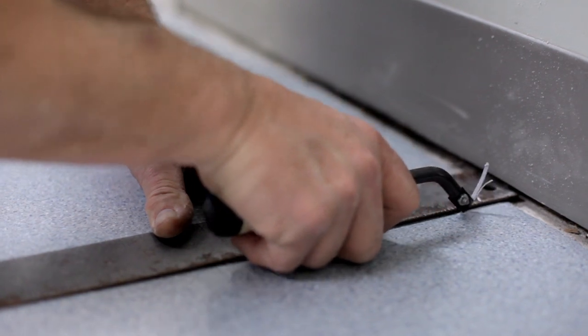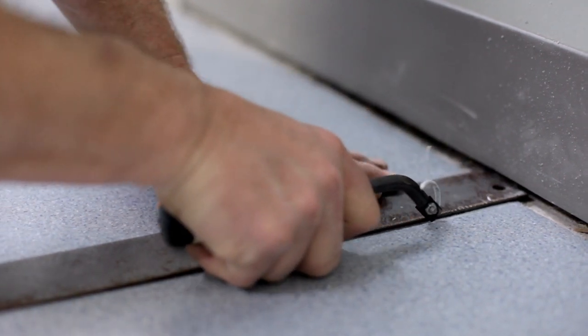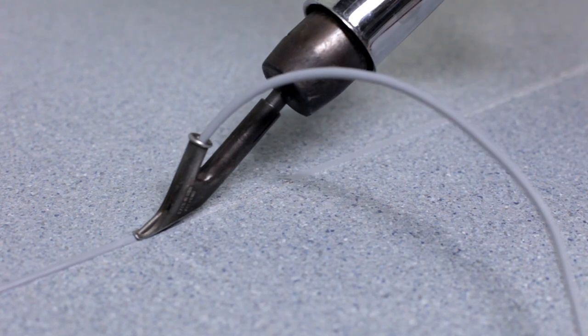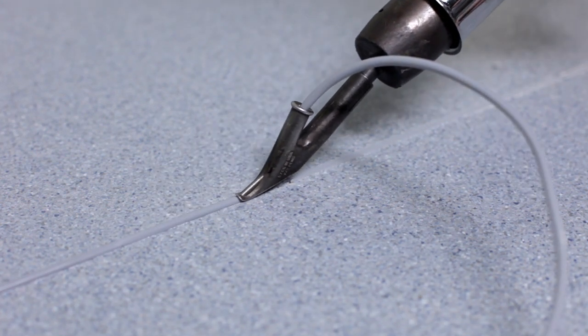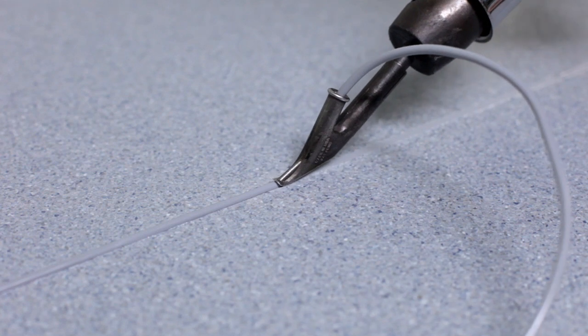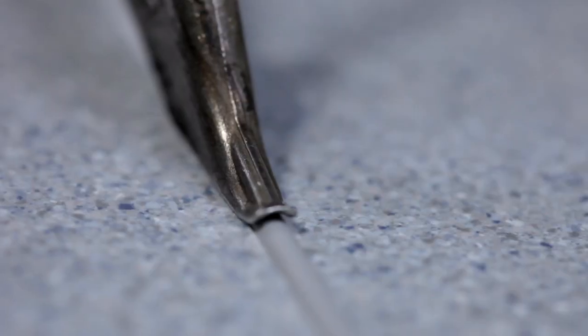Even when using a power groover, it will be necessary to groove the seam at the walls with a hand groover. The weld rod is a round 4mm PVC thread that will melt into the groove and secure the seam edges. The weld rod may be color coordinating or contrasting with the color of the flooring product.